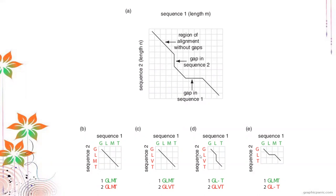Here are examples of alignments. A purely diagonal path gives GLMT — all properly aligned. Another alignment has a difference between M and P but still has the best alignment score. In other cases, we introduce a gap because that provides the best alignment score. Depending on the alignment score, that is how we proceed with these sequences.